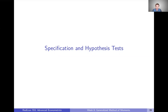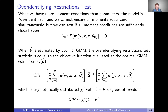We might want to know: are those parameters different from zero, are they different from each other, or maybe there's some function of parameters we care about. The specification test we're going to use here is called the over-identifying restrictions test. The idea is that when we have more moment conditions than parameters, our model is what we call over-identified. We can't ensure that all moments equal zero simultaneously; what we've tried to do is get them all as close as possible to zero simultaneously.